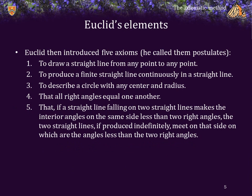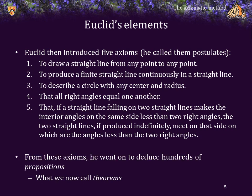Euclid then introduced five axioms — if you studied this in secondary school, you would have seen them described as postulates. The first is: it is possible to draw a straight line from any given point to any other point. Similarly, if you have a line segment from one point to another, it is possible to extend it in a straight line. He had three additional axioms which you can review yourself. Euclid then went on to deduce hundreds of other propositions — we now call these theorems — each proved based on the given axioms.